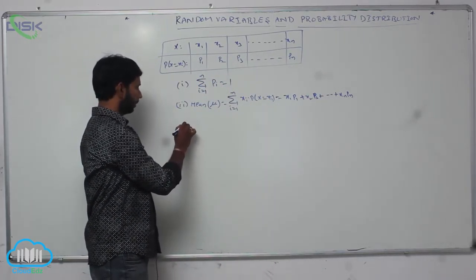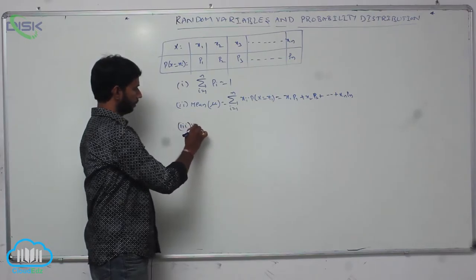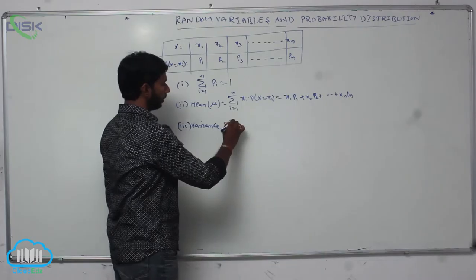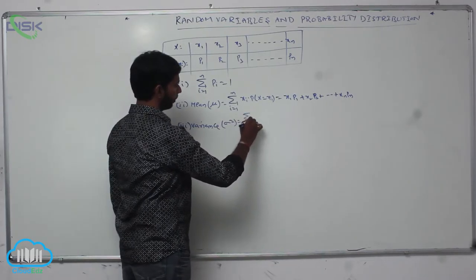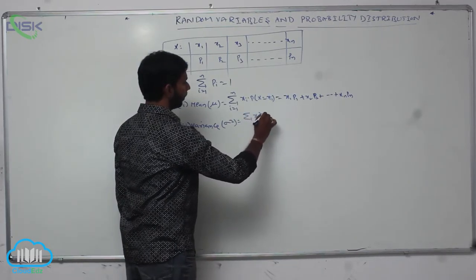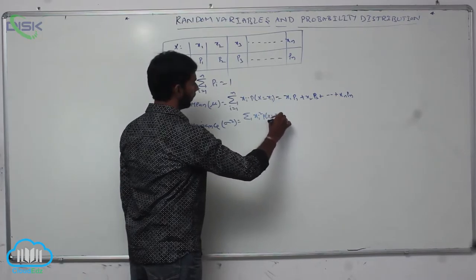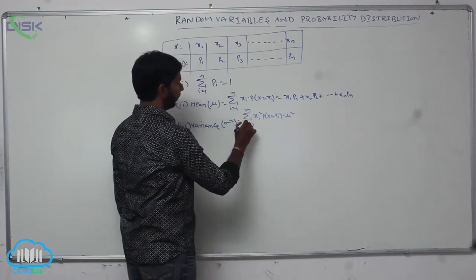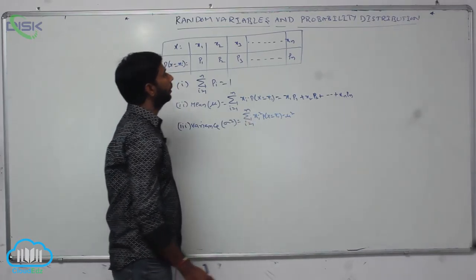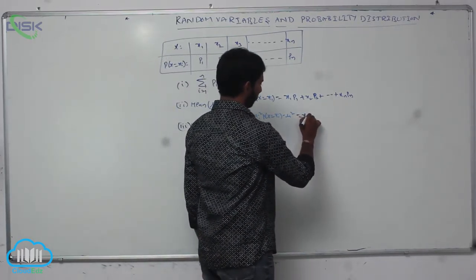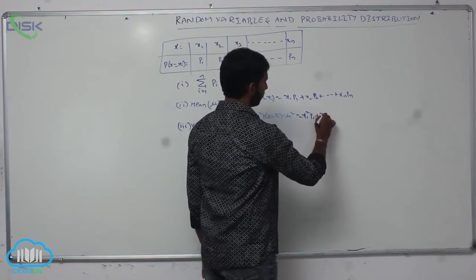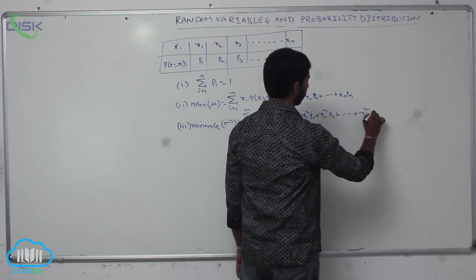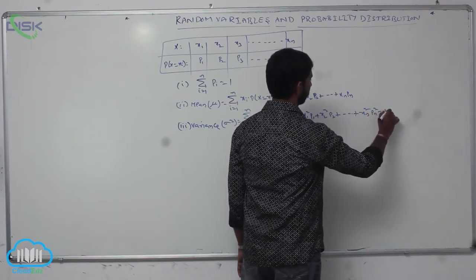Next one, variance. Variance sigma squared is equal to sigma Xi squared times P of X equals Xi minus mu squared. Here, the variance is represented by X1 squared P1 plus X2 squared P2 plus and so on Xn squared Pn minus mu squared.